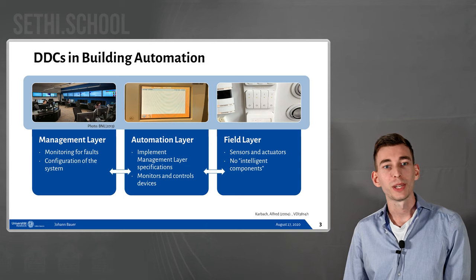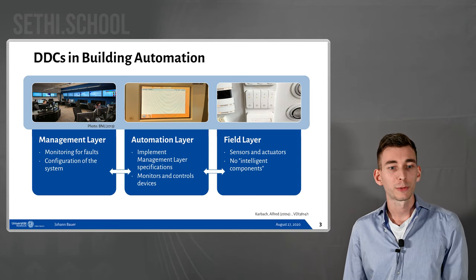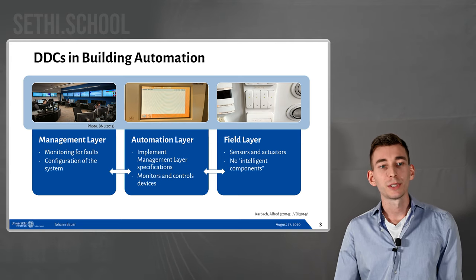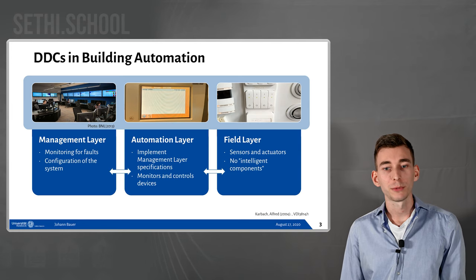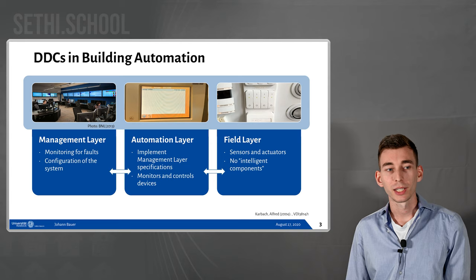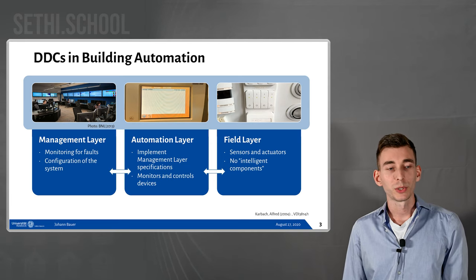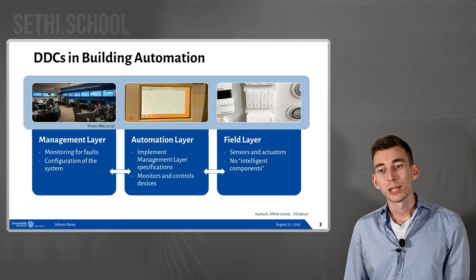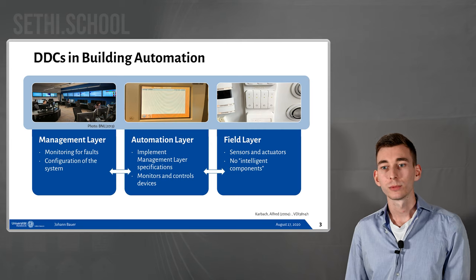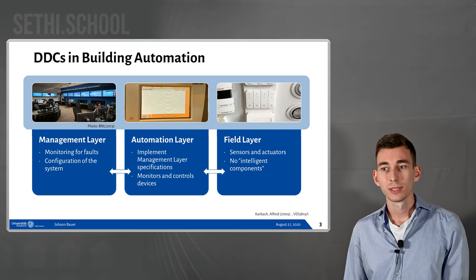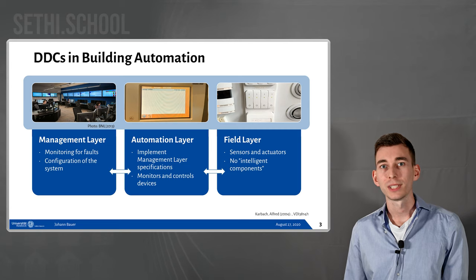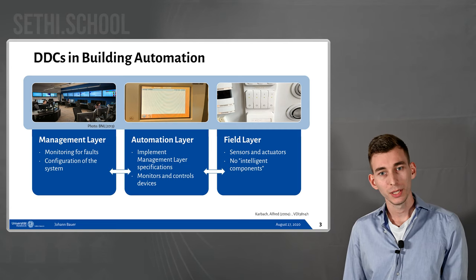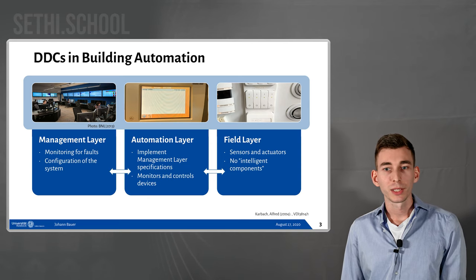A bit of information about building automation. We usually have three different layers in a building automation system. The first one is the management layer where people sit in front of big screens and do all the configuration and monitor for faults. Then we have the automation layer where management layer specifications are implemented and devices are monitored and controlled. Thirdly, we have the field layer where sensors and actuators are — for example, light switches or heating, ventilation, stuff like that. There are no intelligent components in the field layer; all the intelligence is in the middle layer, which is also where the DDC 4200 would be found.